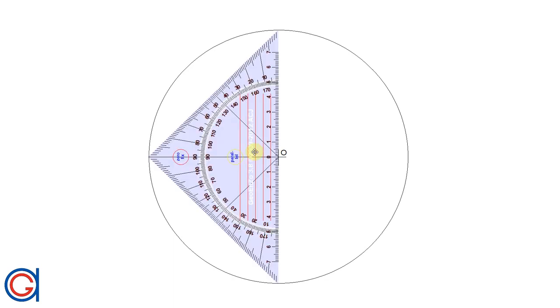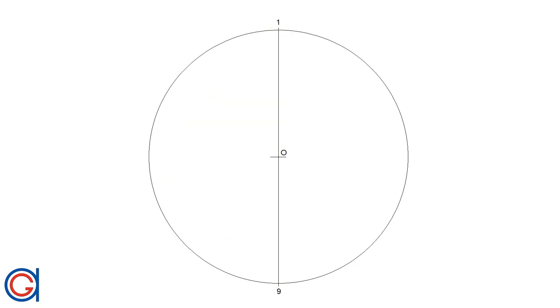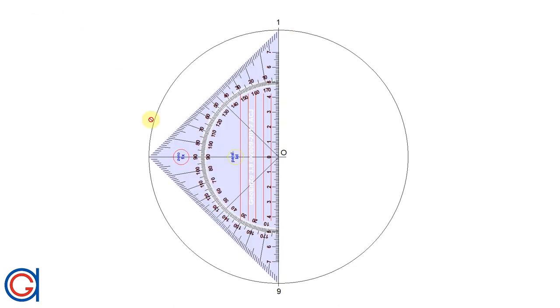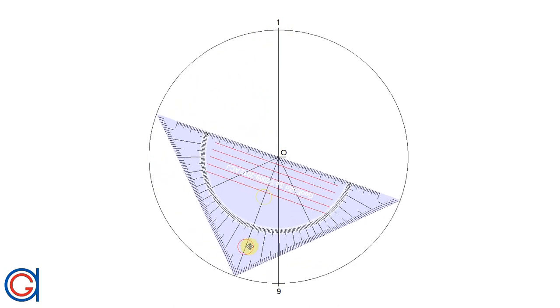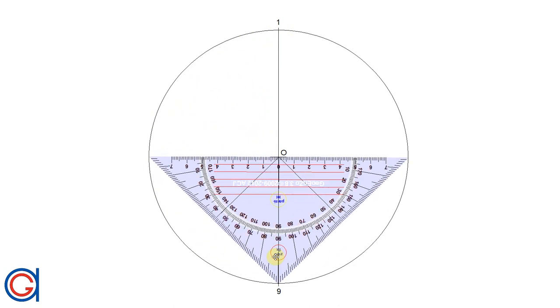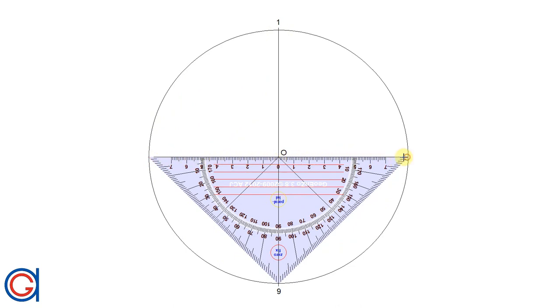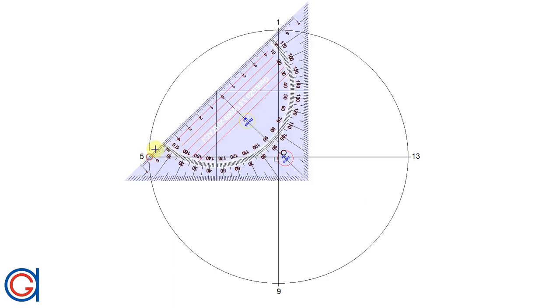To start off, you can see a circle on the screen. The first thing we are going to do is draw a vertical diameter, getting two points which we will call 1 and 9 on the circumference. Now, using the set square with the built-in protractor, you can draw the horizontal diameter going through the origin O, getting two new points on the circumference which we will call 5 and 13.